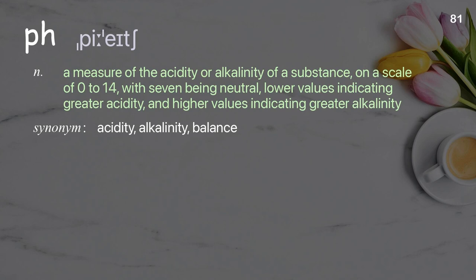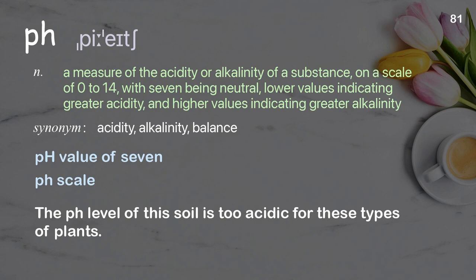pH: a measure of the acidity or alkalinity of a substance on a scale of 0 to 14, with 7 being neutral, lower values indicating greater acidity, and higher values indicating greater alkalinity. The pH level of this soil is too acidic for these types of plants.